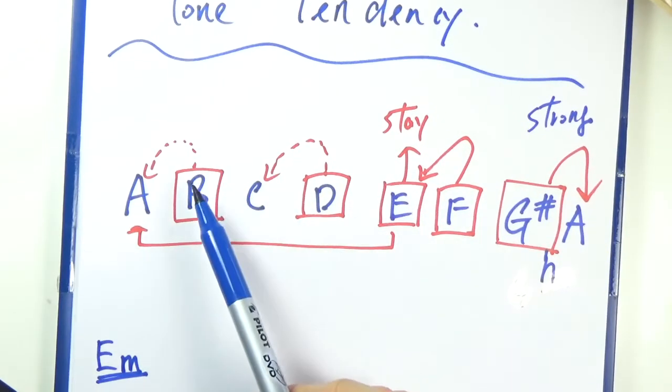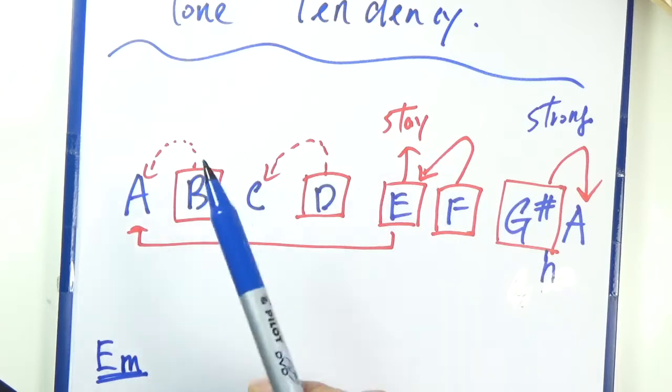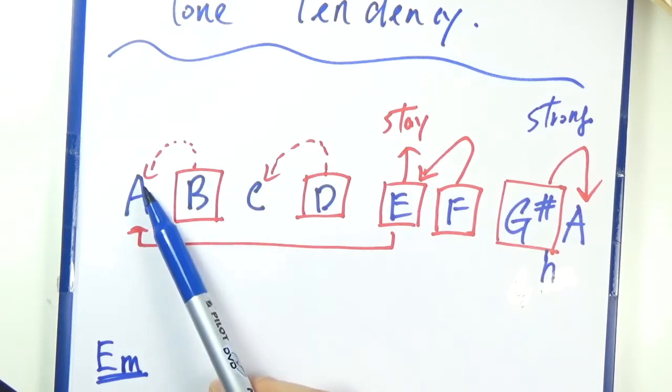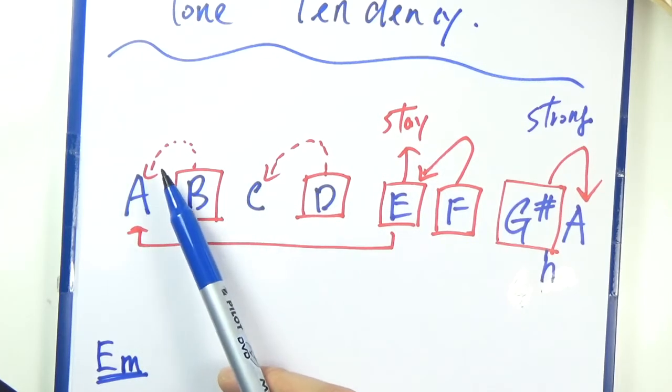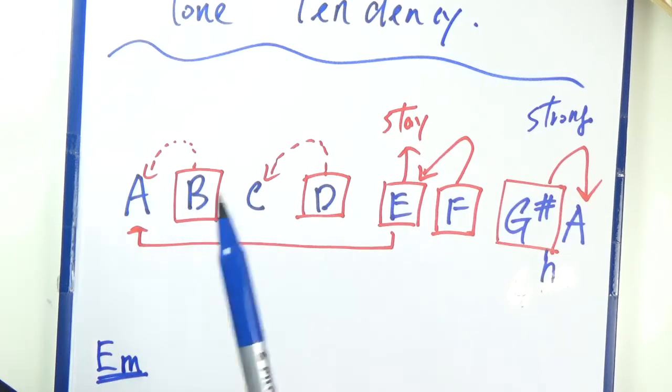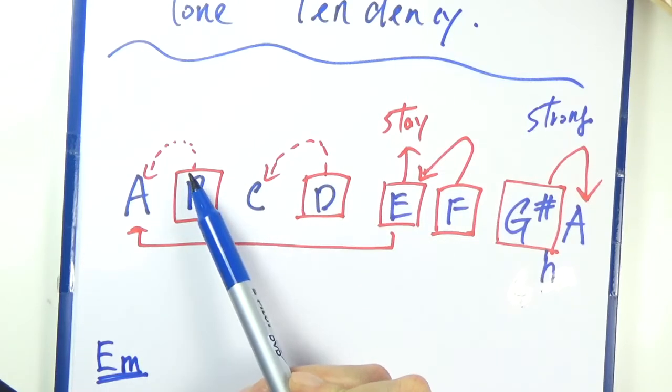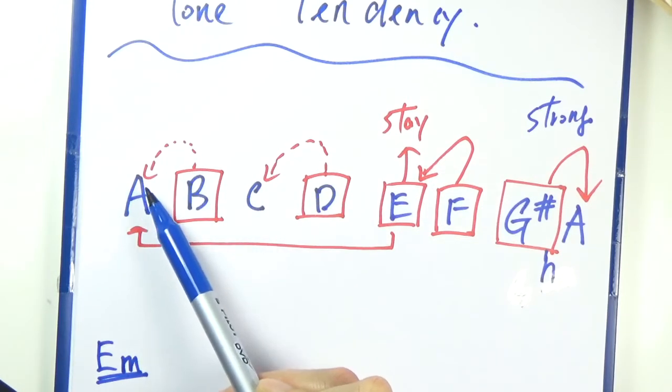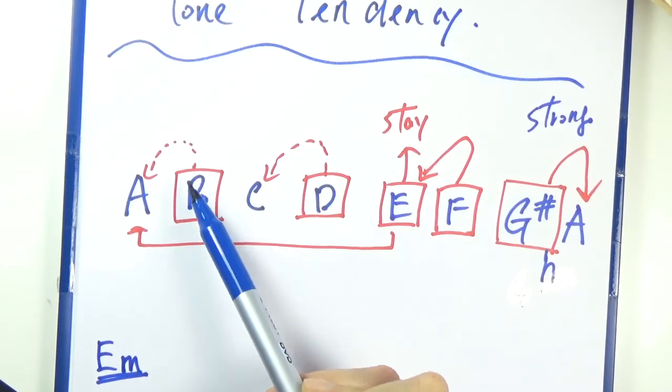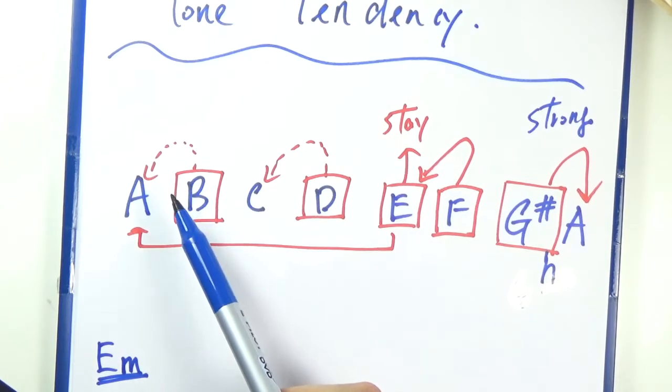Just a quick recap. For example, the B, the second degree of the scale, wants to resolve down a whole step to A. It is relatively weak compared to half steps because whole steps is a larger interval, so the attraction is smaller. B has a resolution point to A, it wants to resolve to A, but it's relatively weaker than half steps.